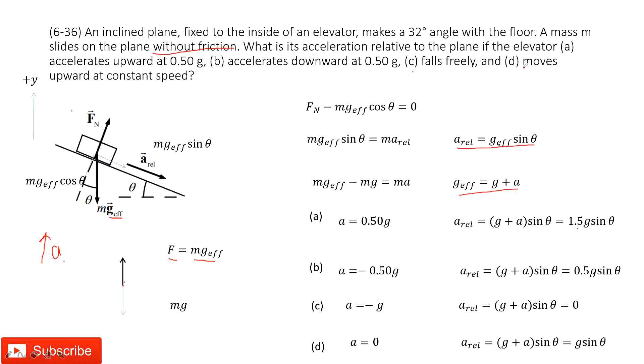The next one tells you the elevator moves upward at a constant speed. Constant speed tells us the acceleration is zero. We get the final answer, relative acceleration is g sine theta.